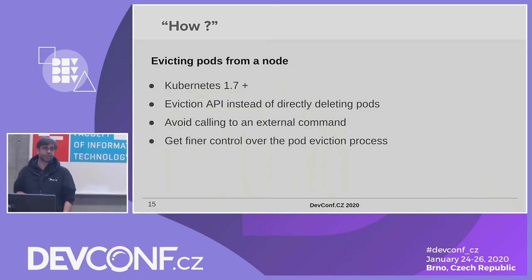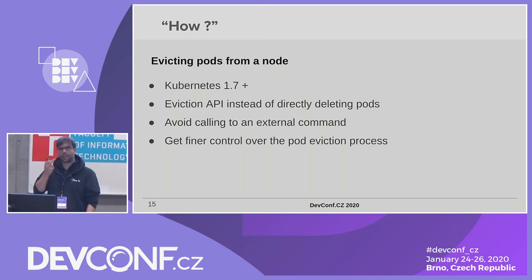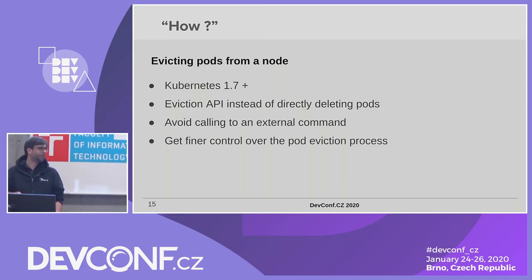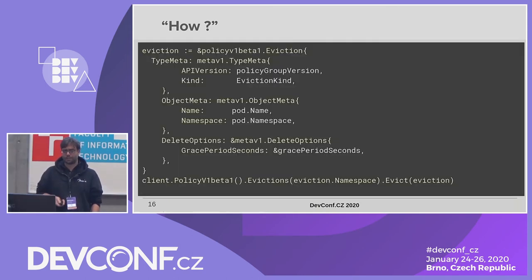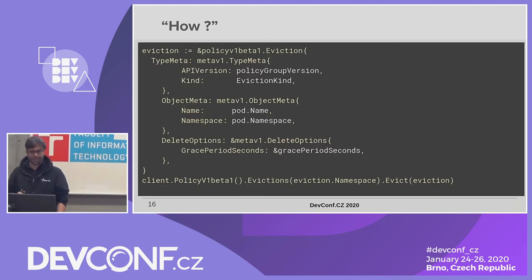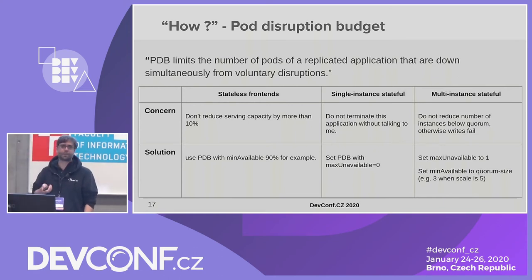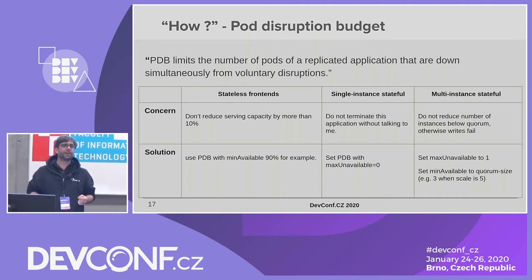Now we'll talk about the eviction API, which came in Kubernetes 1.7 and above. We use it instead of directly deleting a pod. We can also avoid calling an external command and utilize this API in our codebase if we want. We have finer control over the eviction process. It pretty much looks the same as the delete API but with a special kind for eviction.